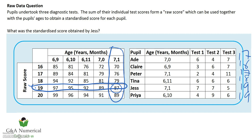Now I'll look up each pupil's standardized score in turn. ADE had a raw score of seventeen with seven years and no months — his score was 79. Claire was a sixteen with six years and nine months — she's an 85. Peter was a seventeen with seven years and one month — he's a 76. Tina was an 18 with six years and eleven months — that's an 85. Jess we already saw was 87. And finally Priya was a 19 with six years and ten months — that was a 95.